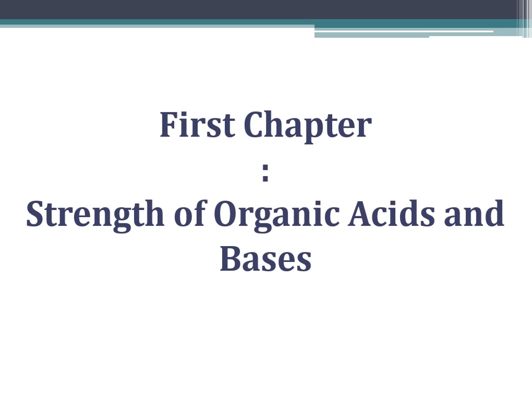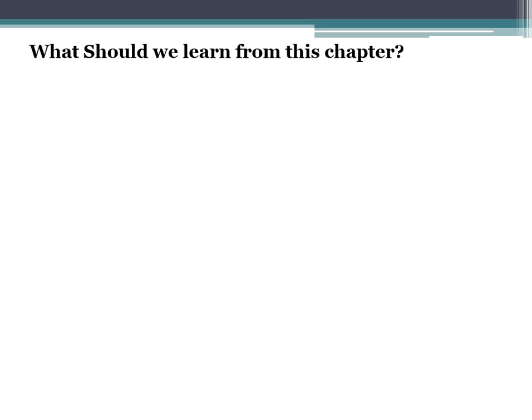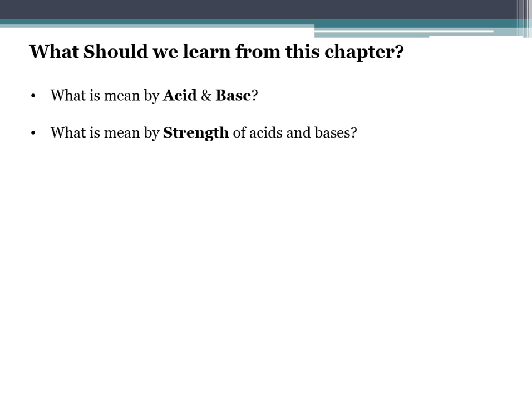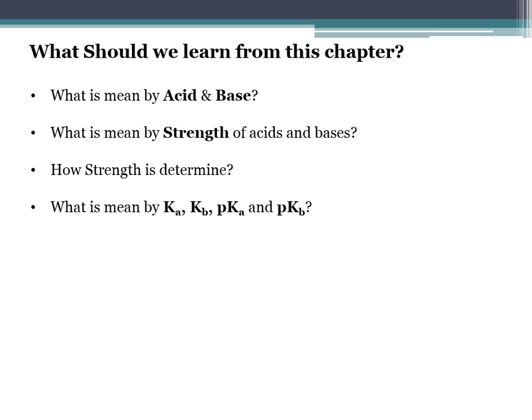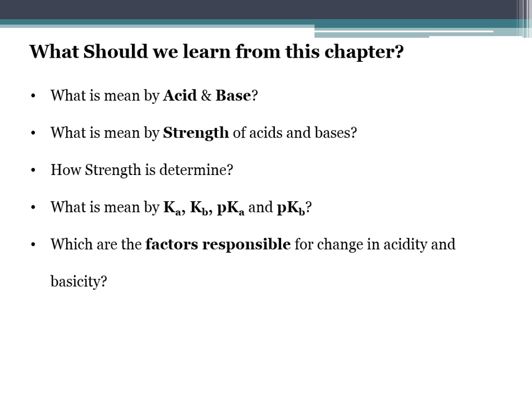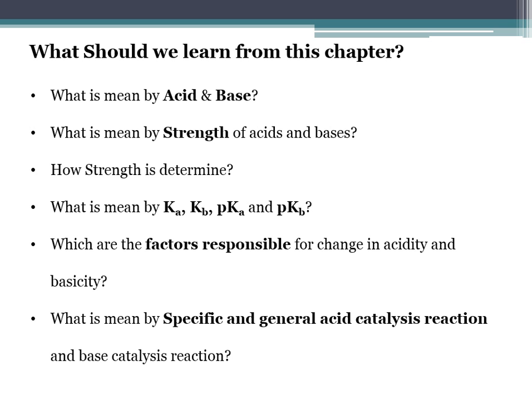Now we will start our first chapter: the strength of organic acids and bases. At the end of this topic you must know what is meant by acid and base, what is meant by strength of acids and bases, how strength is determined, what is meant by Ka and Kb, pKa and pKb values, what are the factors responsible for change in acidity and basicity, and what is meant by specific and general acid catalysis and base catalysis reactions.